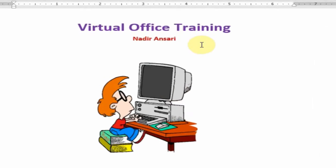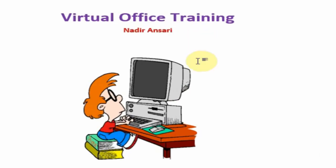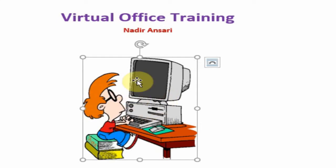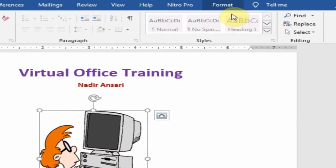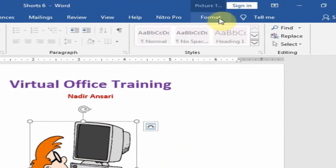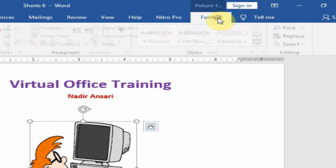Welcome to the virtual office training. Today we will learn how to change the direction of a picture horizontally. Just click on the picture and go to the Format tab — here is the Format option.